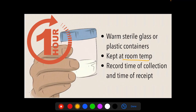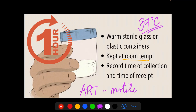Specimens awaiting analysis must be kept at 37 degrees Celsius. For assisted reproductive technologies (ART), which include in vitro fertilization, motile sperm must be isolated from seminal plasma within one hour of ejaculation to protect sperm from the inhibitory effect of seminal plasma on fertilization.